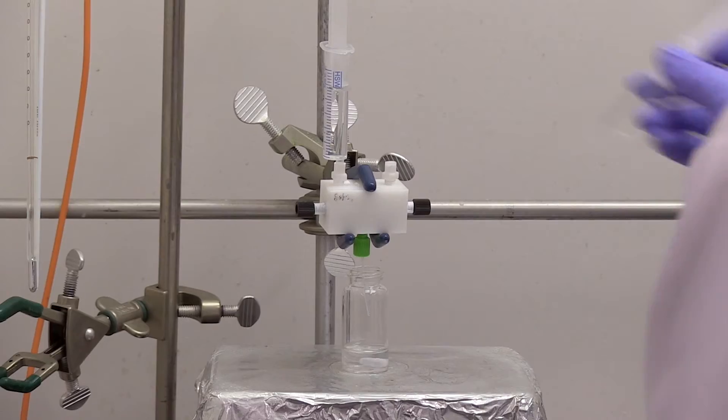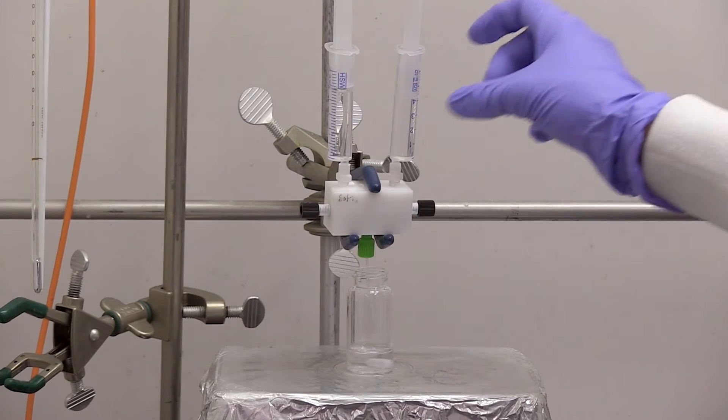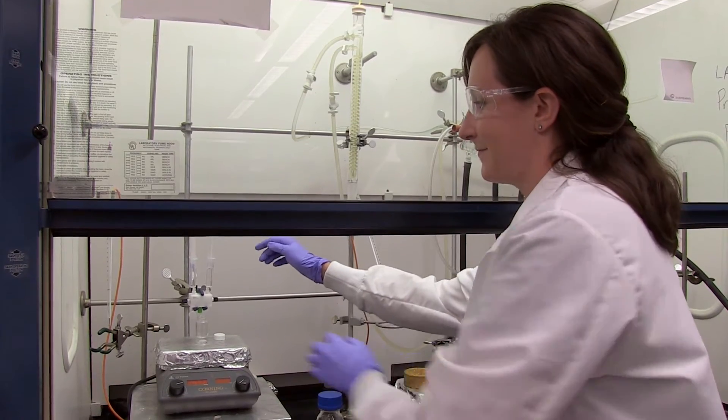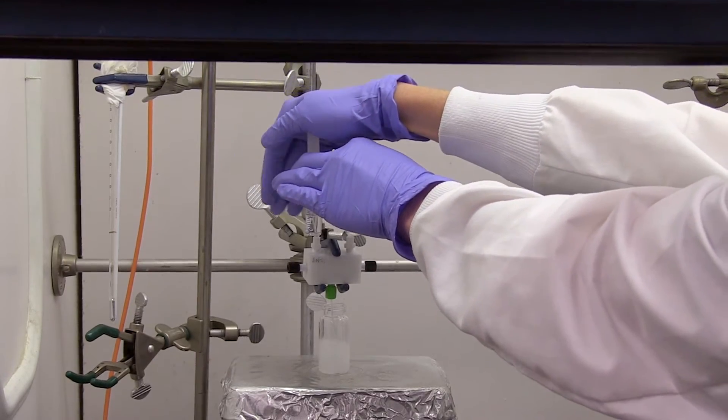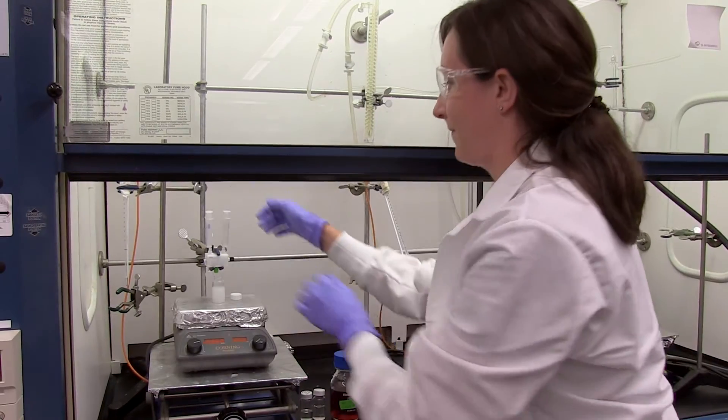We're actually able to generate quite a bit of Janus particles as illustrated by this dispersion here. We have two syringe pumps that we manually inject to get very high mixing speeds that we then subsequently precipitate out polymer Janus particles.